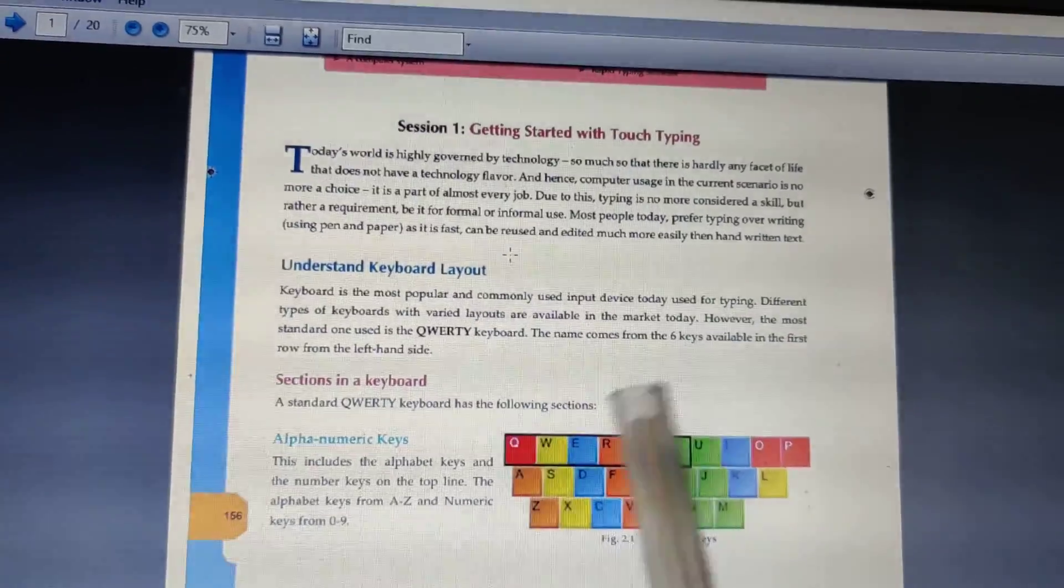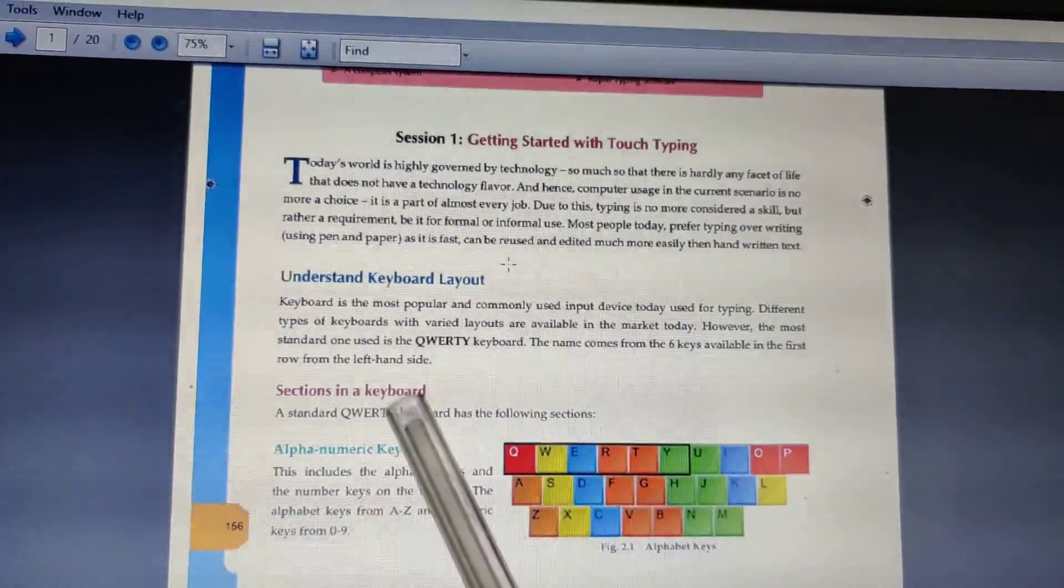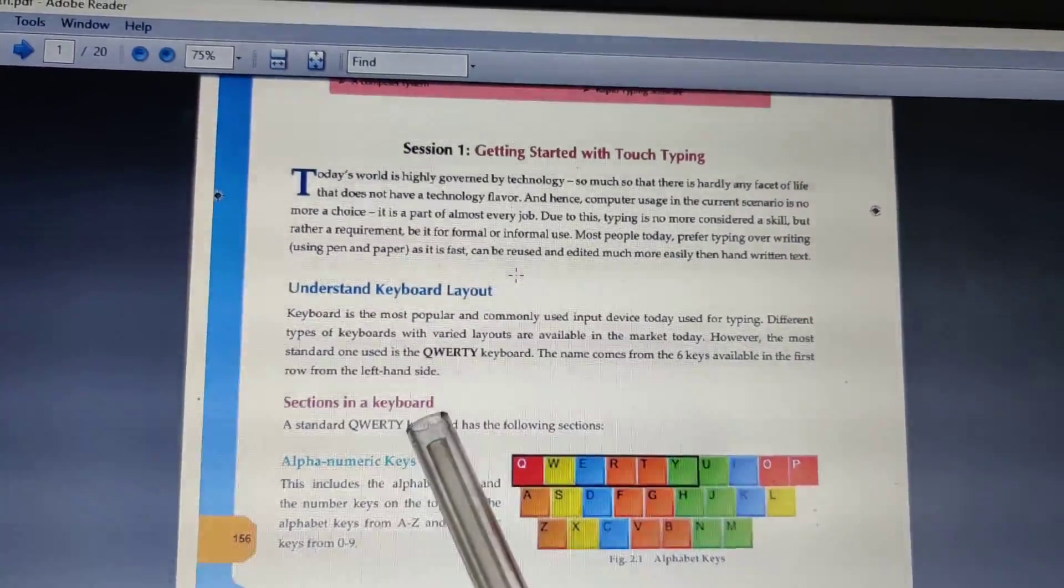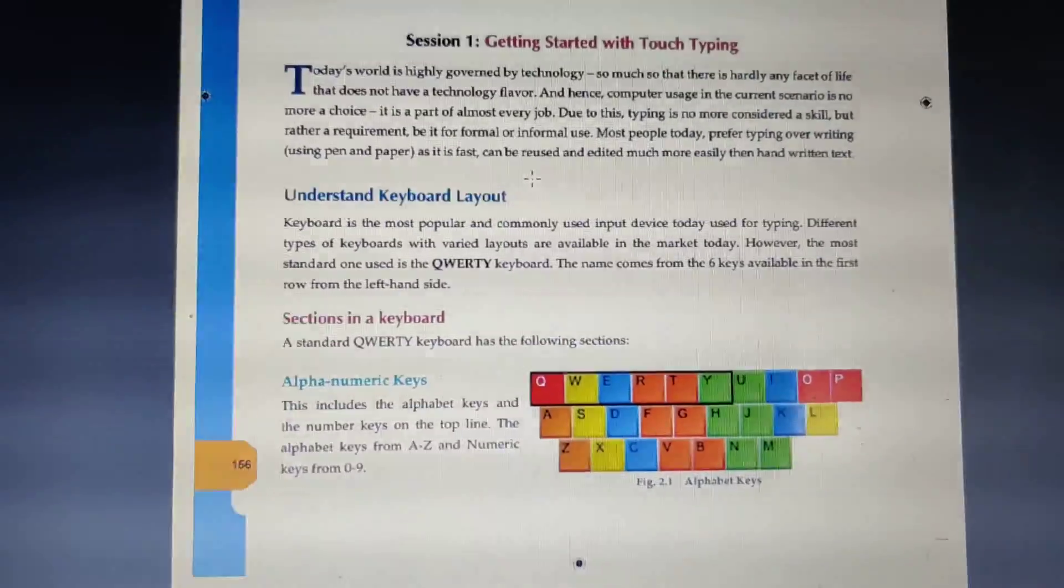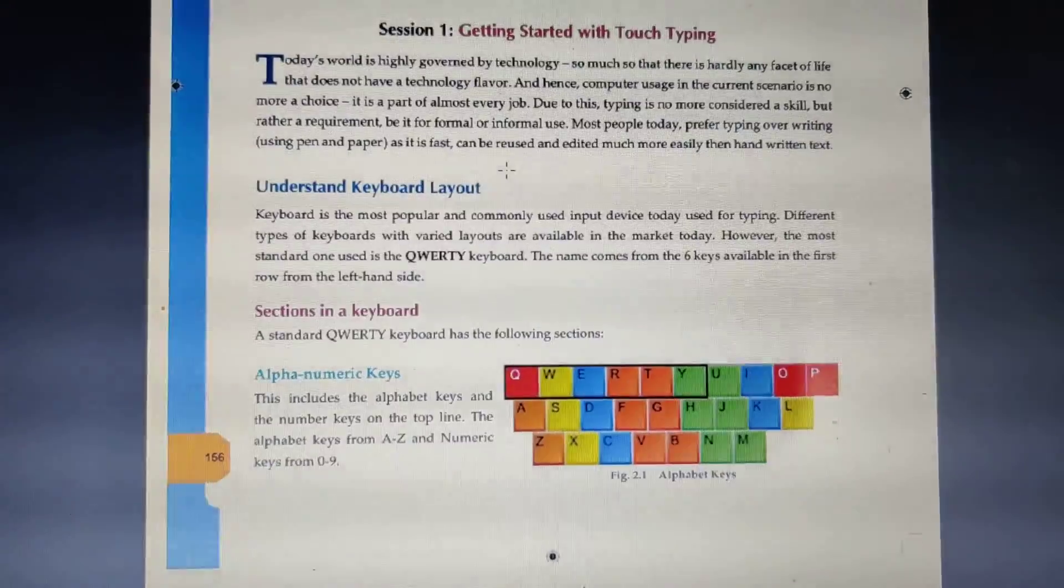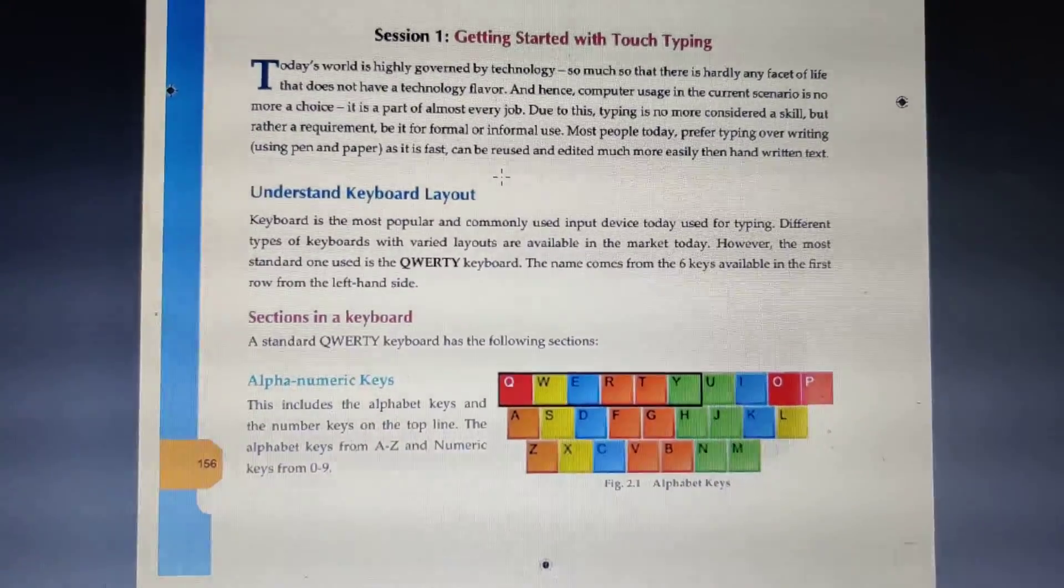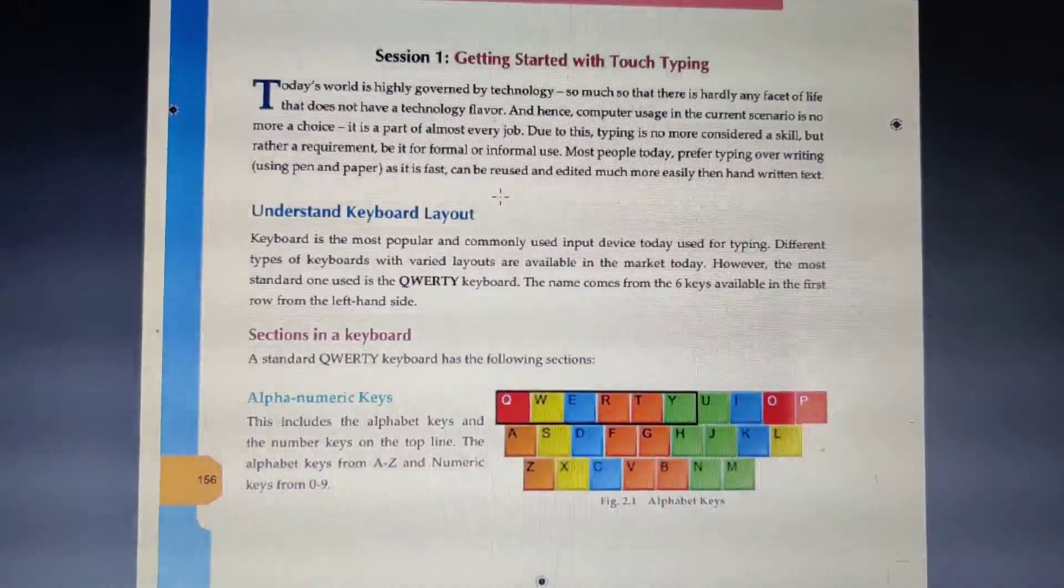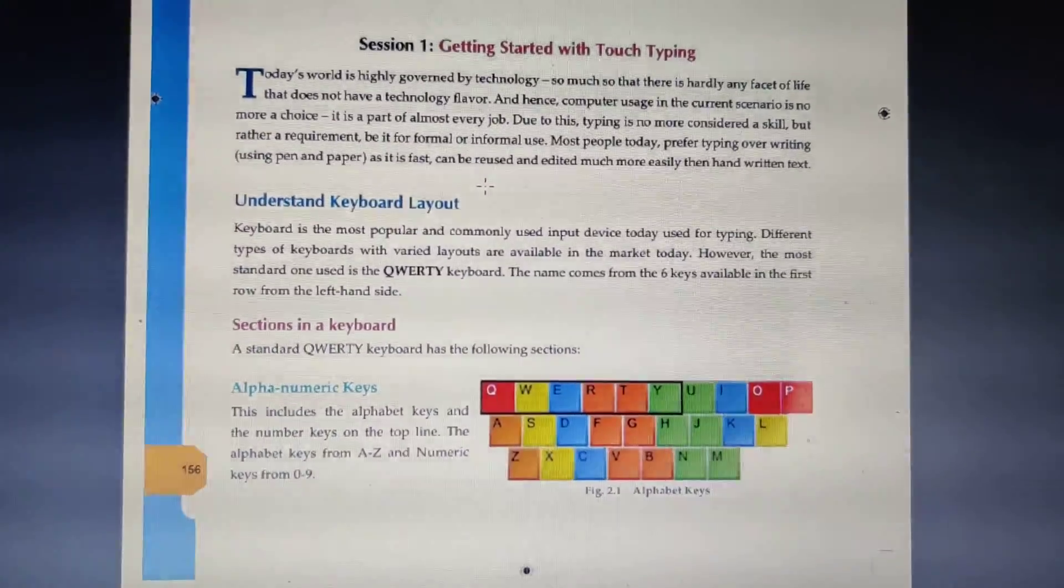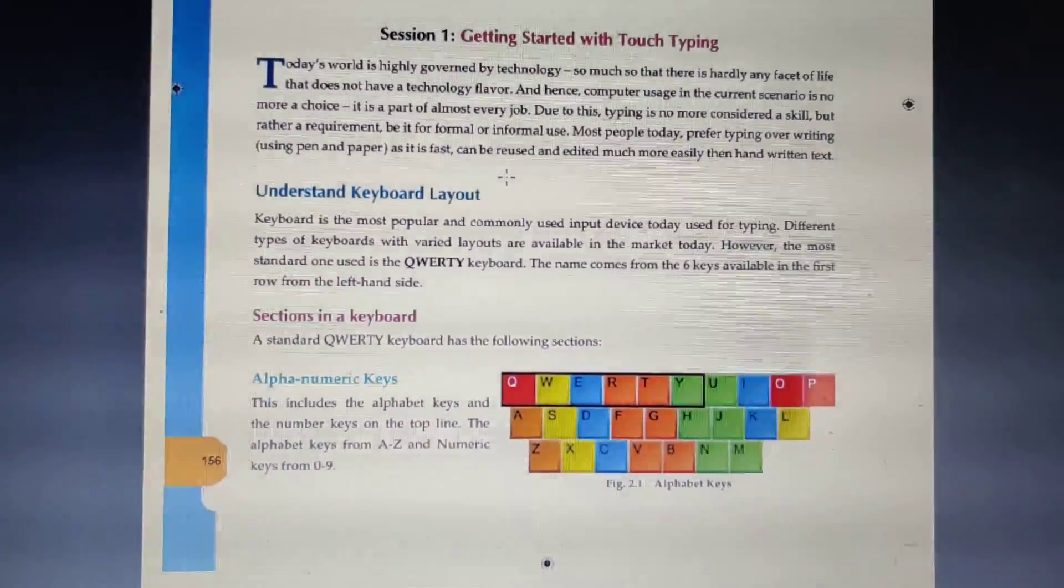So let's start sections in a keyboard. A standard keyboard has the following sections. Now we discuss the different sections. First is alphanumeric keyboard. This includes the alphabet keys and the numeric keys on the top line side. The alphabet keys are A to Z, and numeric keys are from 0 to 9.